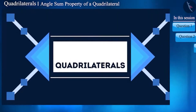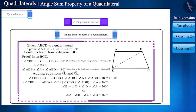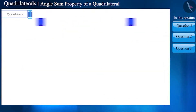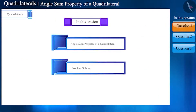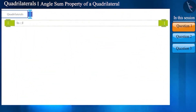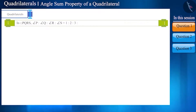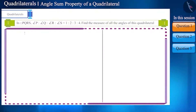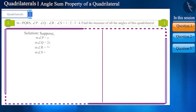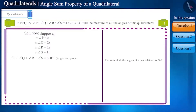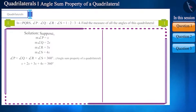Hello friends, welcome to this video on quadrilaterals. In the previous video we discussed the angle sum property of a quadrilateral. Today we will solve some questions related to that topic. In quadrilateral PQRS, angle P, angle Q, angle R and angle S are in the ratio 1:2:3:4. Find the measure of all its angles. Assume that the measure of angle P, angle Q, angle R and angle S is x, 2x, 3x and 4x respectively. We know that the sum of the angles of a quadrilateral is 360 degrees, therefore x plus 2x plus 3x plus 4x equals 360 degrees.